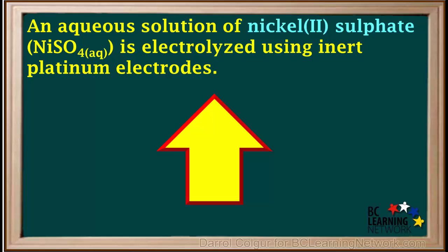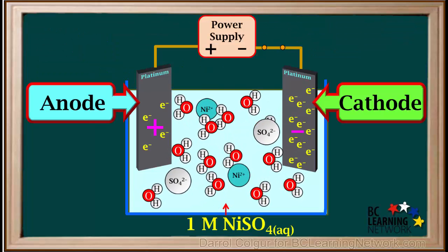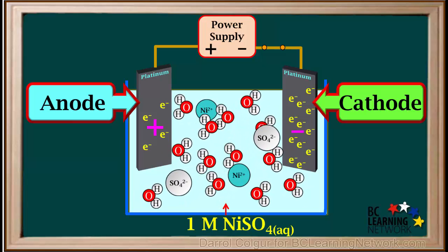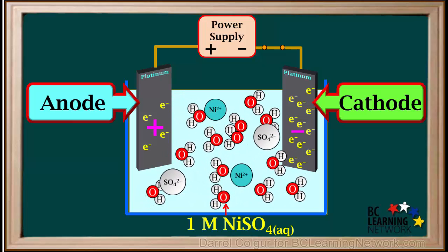We have an aqueous solution and inert electrodes, so we know this is a type 2 cell. We can visualize this solution as mobile nickel 2+ ions, sulfate ions, and a large number of water molecules all moving in the solution.